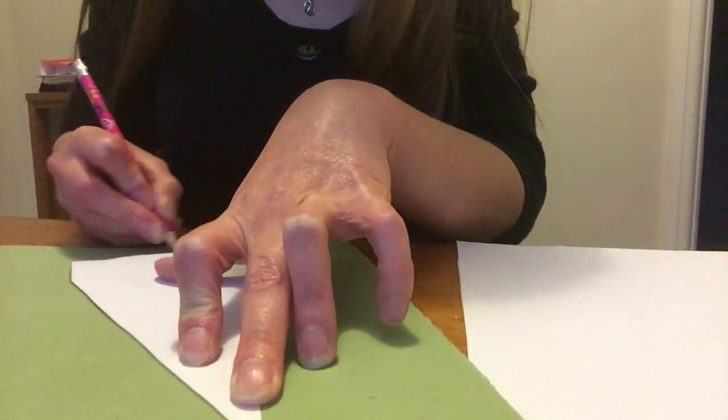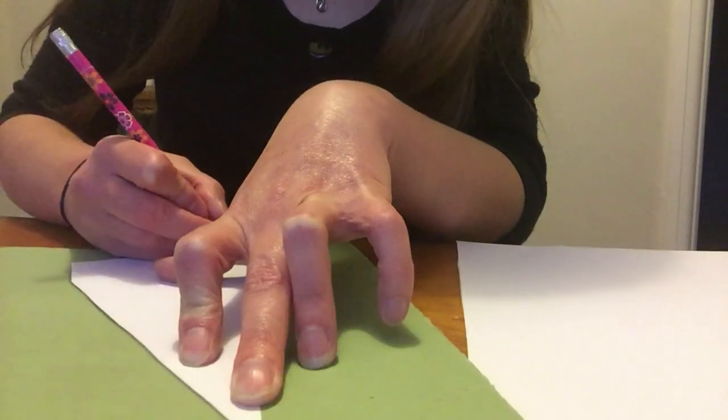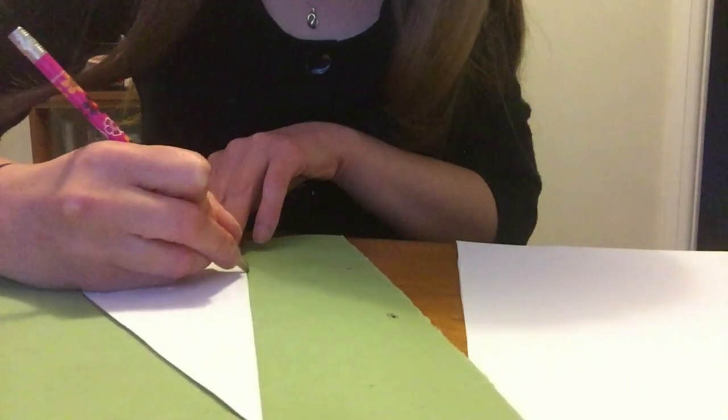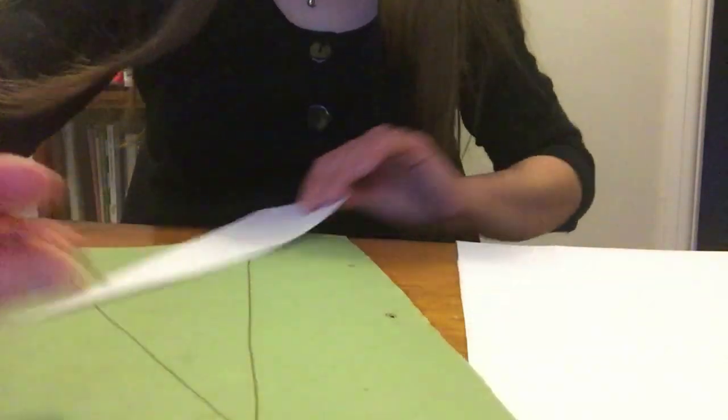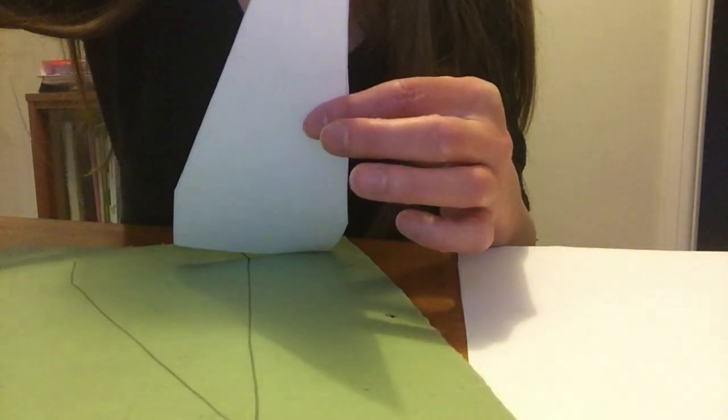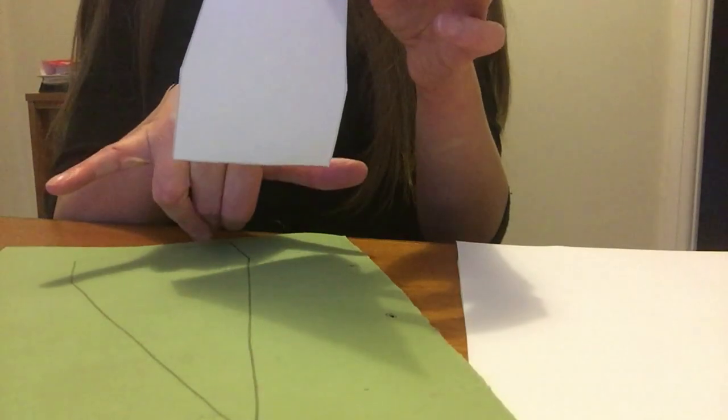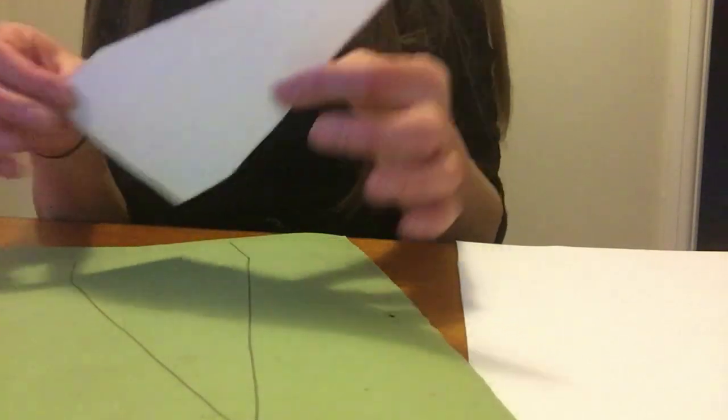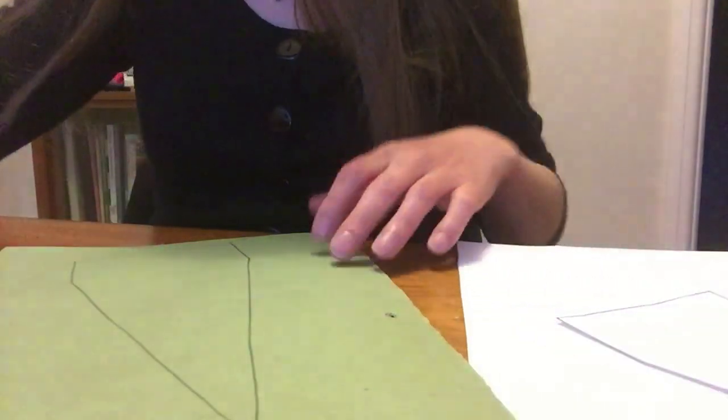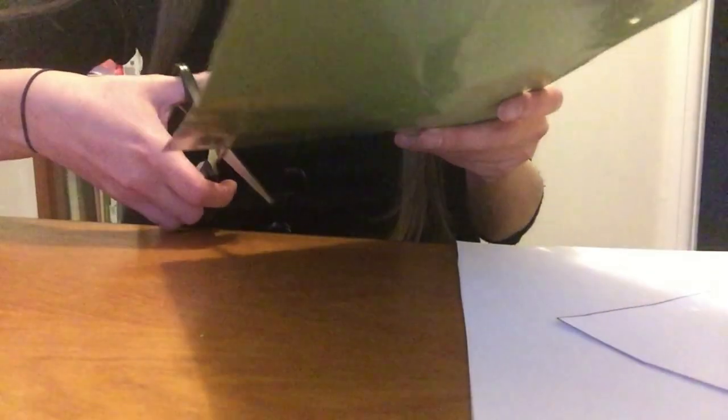If you're not using the template, just make sure you've got a triangle about 23 centimeters tall and 10 and a half centimeters wide at the base, and that'll be about the same size. You can cut the edges of the corners off if you want but it doesn't matter. And then with adult's help, cut out your triangle.